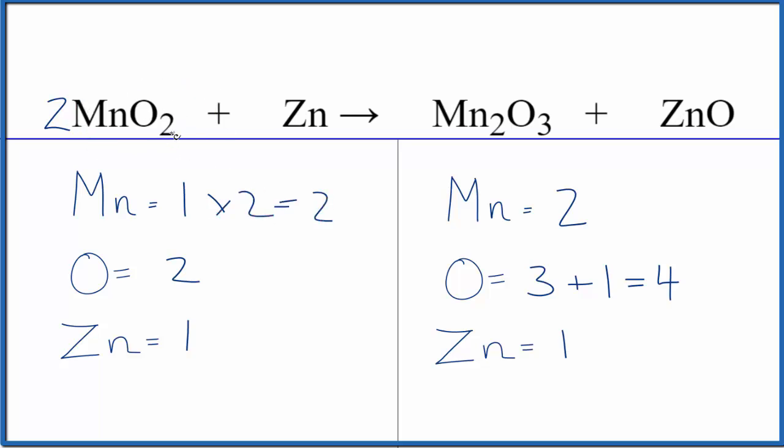And the two goes to everything, so two times two. That would give us four oxygens. And actually, this equation is balanced, so that just worked out for us.